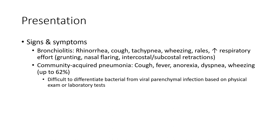Signs and Symptoms. Bronchiolitis: rhinorrhea. Viral pneumonia: wheezing, increased respiratory effort such as grunting and nasal flaring, intercostal and subcostal retractions. Community-acquired pneumonia: fever, anorexia, wheezing in up to 62%. It is difficult to differentiate bacterial from viral parenchymal infection based on physical exam or laboratory tests.